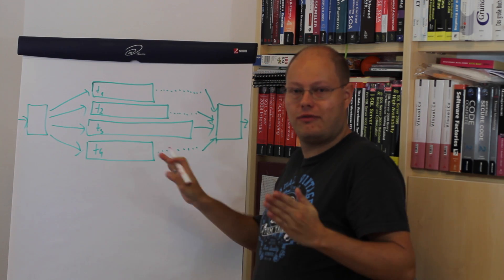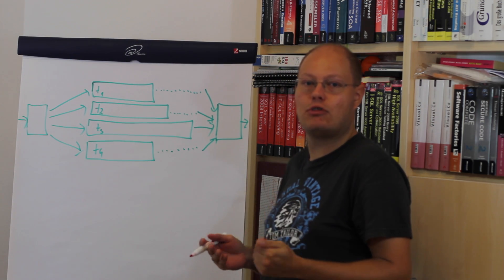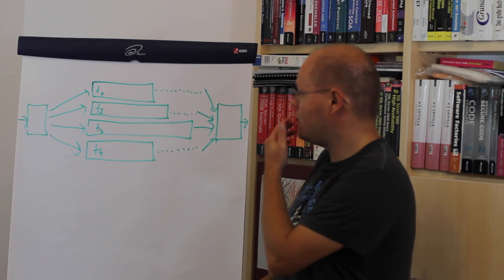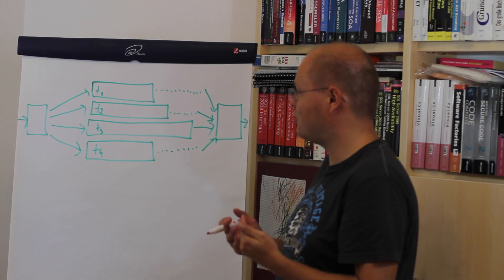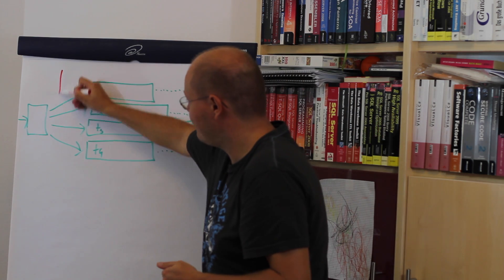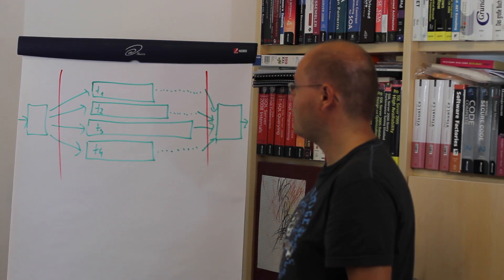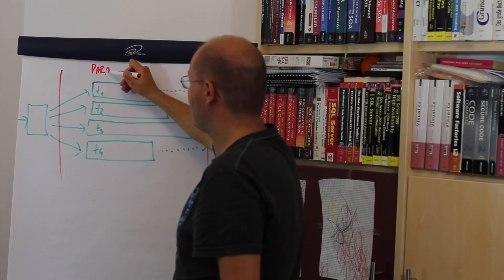Let's switch now over to the flipchart to lay out the foundation of CX Packet Waits. I want to demonstrate how CX Packet Waits can occur in SQL Server during query execution. I'm displaying here a very simplified query plan which consists of a single-threaded region at the beginning, a single-threaded region at the very end, and in the middle we have a parallel region.